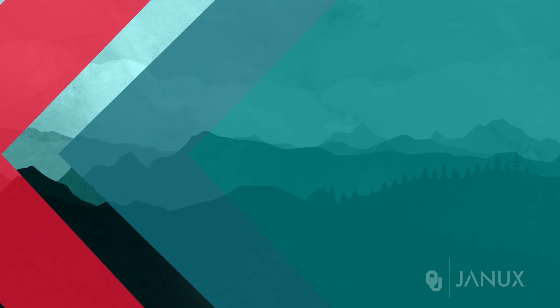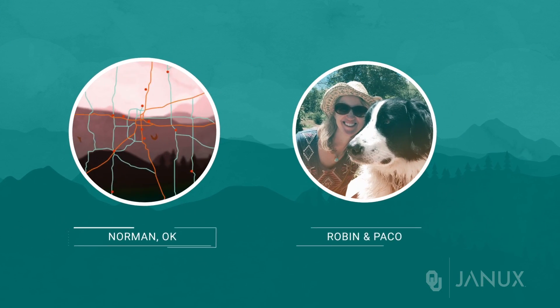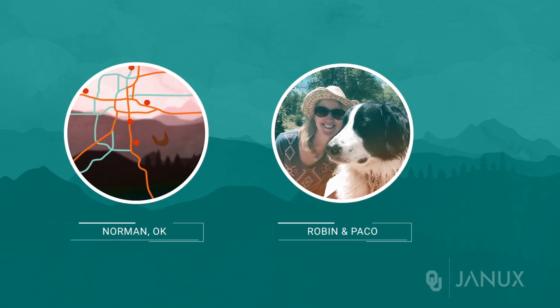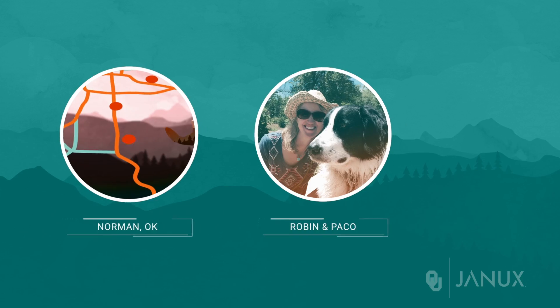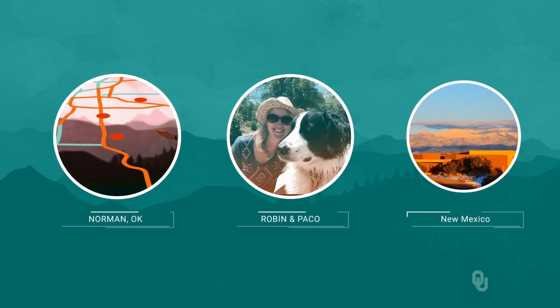Hi, I'm Kevin Greer, a Presidential Professor of Economics at the University of Oklahoma. I live in Norman with my wife Robin and our dog Paco, but when school's out we spend a lot of time up in northern New Mexico.